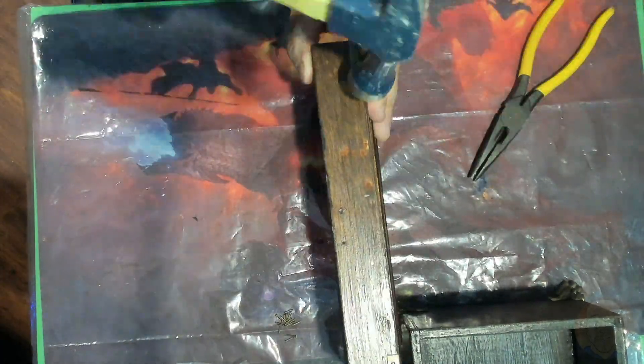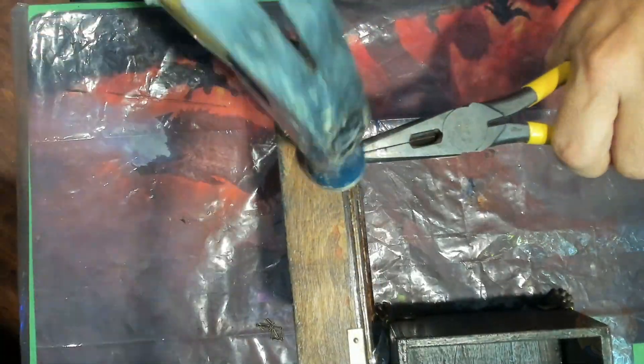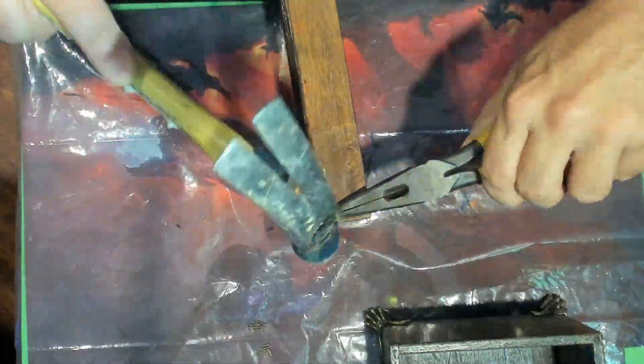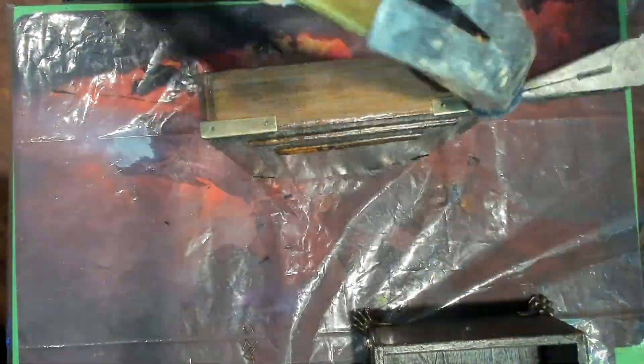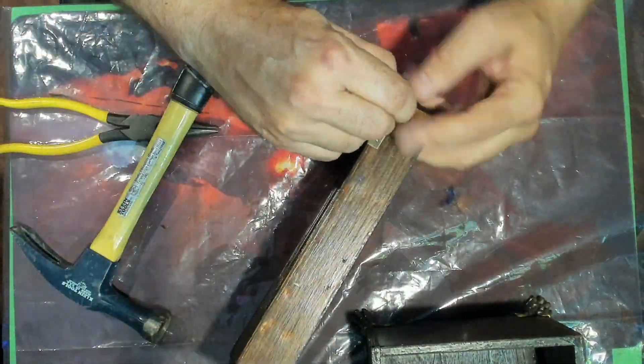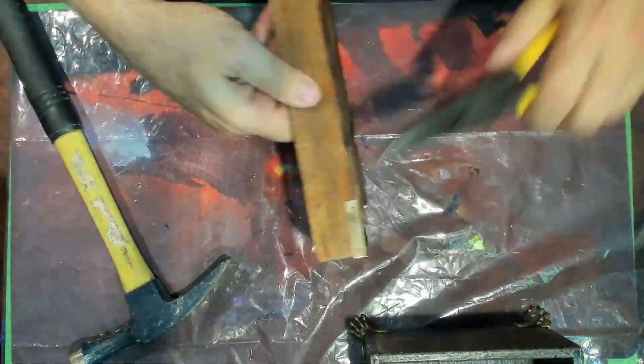These brads are specifically forged for tasks where he must be securing something without carving a cavernous gap, or scarring the wood with a conspicuous mark. The secret lies in grasping that brad with a firm grip. I prefer to use me trusty needle-nose pliers, then with a hearty swing of the hammer, give it a resounding whack.